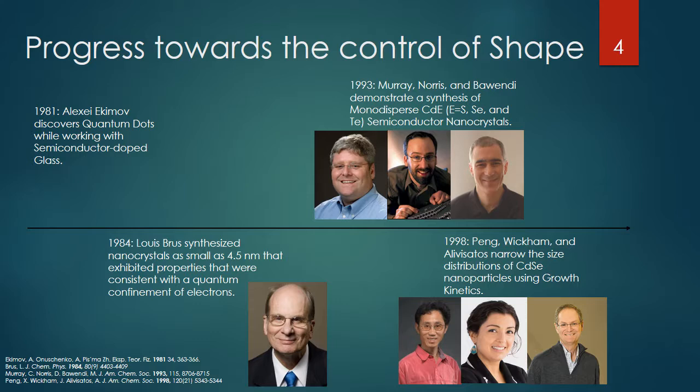Moving from 1981 to 1984, Louis Brus was able to synthesize nanocrystals as small as 4.5 nanometers in radius. This was very useful because he was able to use these very small nanoparticles to show the quantum confinement effect of the electrons of the particles. He was able to demonstrate this quantum confinement based on the same color change — once this color change was happening, you know you have quantum confinement and that these nanoparticles are responsible for color change based on their size.